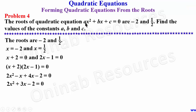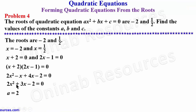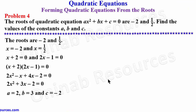Comparing 2x squared plus 3x minus 2 = 0 with ax squared plus bx plus c = 0: the coefficient of x squared is 2, so a = 2; the coefficient of x is 3, so b = 3; and the constant term is negative 2, so c = negative 2. This completes problem four.